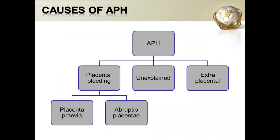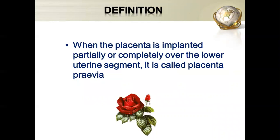Antepartum hemorrhage has three main causes: placental bleeding, unexplained causes, and extra-placental bleeding. The placental bleeding can be either due to placenta previa or abruptio placenta. So antepartum hemorrhage mainly consists of two conditions — placenta previa and abruptio placenta. Let us discuss placenta previa today.